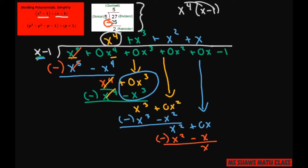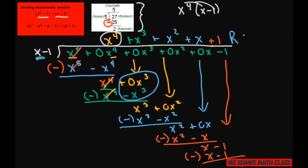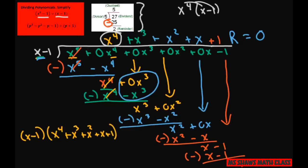Multiply x squared by x and you get x squared minus x. Subtract and that gives you x. Bring down the negative 1, then multiply — 1 times x minus 1 is x minus 1. When you subtract you get zero, so our remainder is zero. This whole thing means that x minus 1 times x to the fourth plus x cubed plus x squared plus x plus 1 equals our dividend, x to the fifth minus 1.